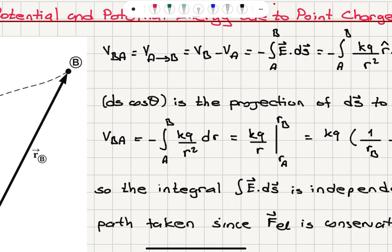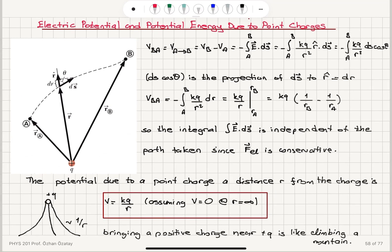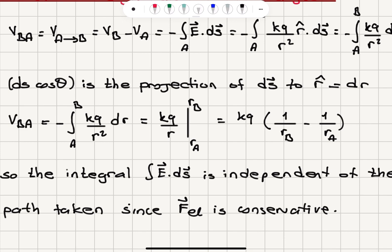So the potential of B with respect to A is minus the integral from A to B of Kq over R² dR. That projection of ds onto R-hat is simply a small change in R, namely dR. Integrating Kq over R² gives minus 1 over R, and with the two minus signs canceling, we get Kq over R evaluated from R_A to R_B.